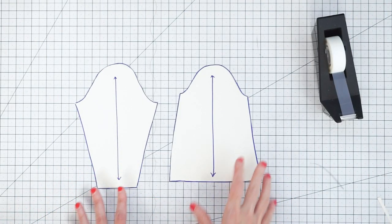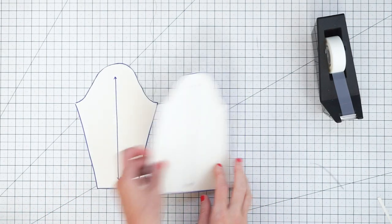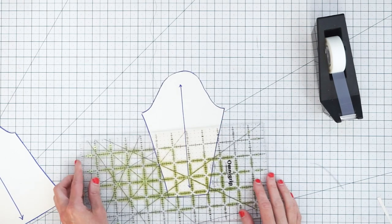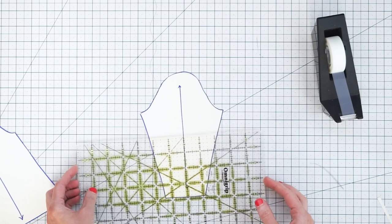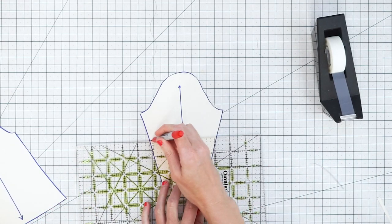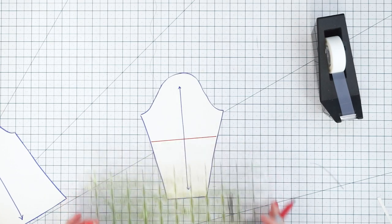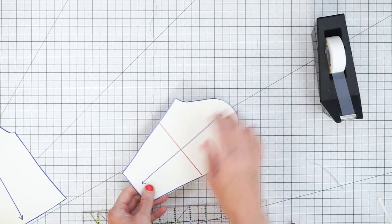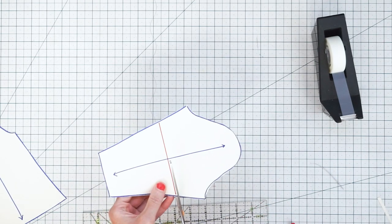And now let's lengthen our pattern pieces. Let's start with our tapered sleeve and we're going to take our ruler and a pen and we're going to draw in a lengthen shorten line just right here in the middle. And this line is perpendicular to our grain line and this will make sure that we keep our sleeve nice and on grain when we cut it out.